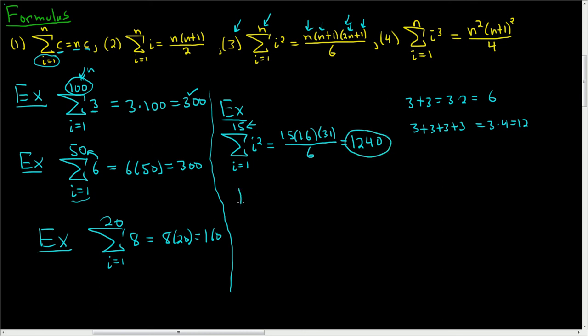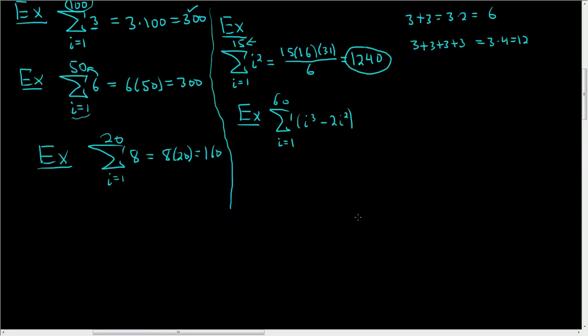Let's try another one, a little bit harder. Let's look at the sum as i runs from 1 to 60 of i cubed minus 2i squared. So let's be really careful here. In this case, we want to break it up.